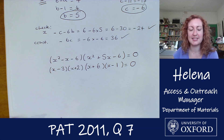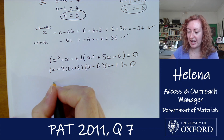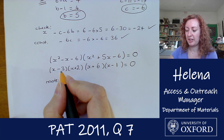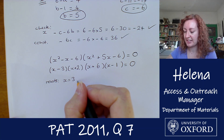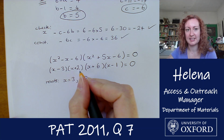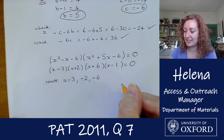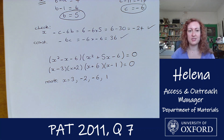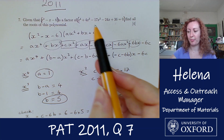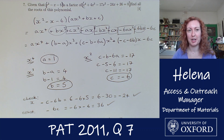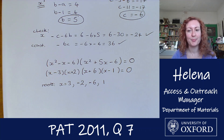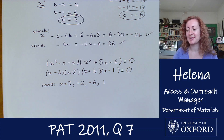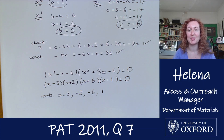Setting each bracket to zero gives the four roots: x equals 3, x equals minus 2, x equals minus 6, and x equals 1. Those are all four roots of this fourth-order polynomial. We found them by factorizing using the given quadratic factor. I hope that was helpful — you might solve it a different way, and that's fine. Join us next week where Catherine will take us through another PAT problem.